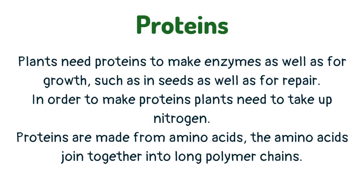Plants need proteins to make enzymes, as well as for growth — such as in seeds — and for repair. In order to make proteins, plants need to take up nitrogen. Proteins are made from amino acids, which join together into long polymer chains.